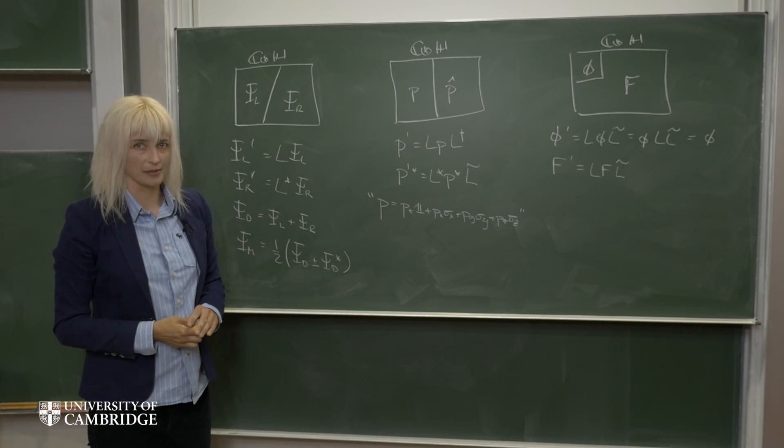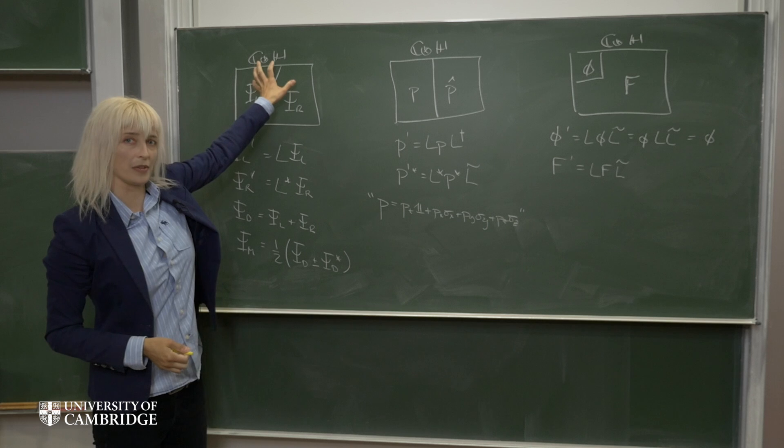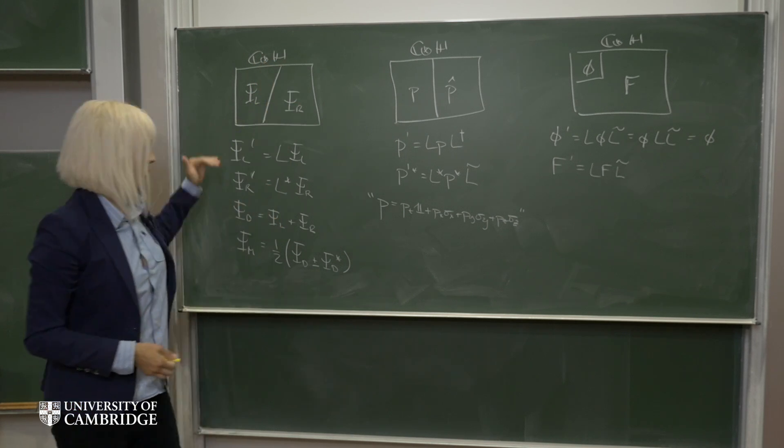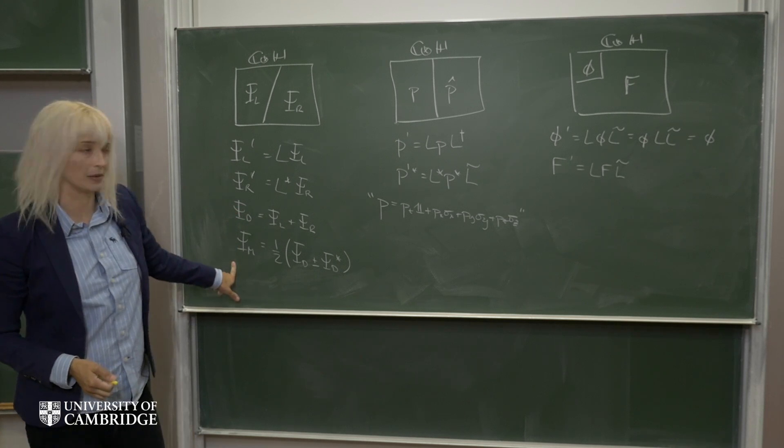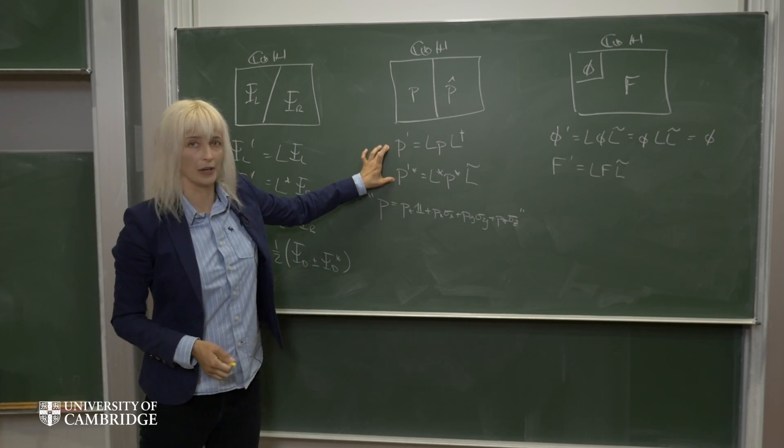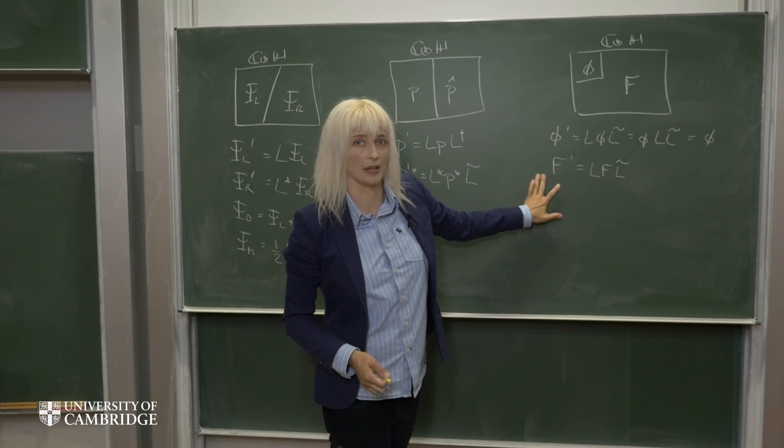So just to summarize, using just the algebra of the complex quaternions, we're able to describe left and right-handed Weyl spinors, Dirac spinors, Majorana spinors, contravariant and covariant four vectors, scalars, and the field strength tensor.